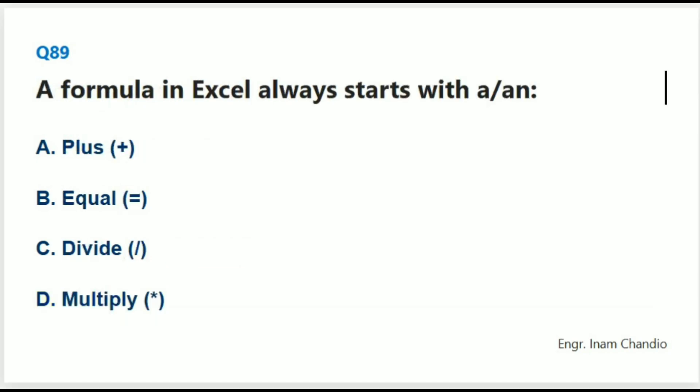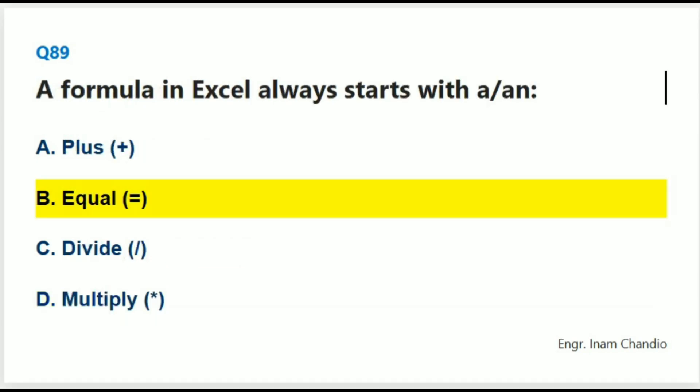A formula in Excel always starts with: The correct answer is B. = (equals sign).